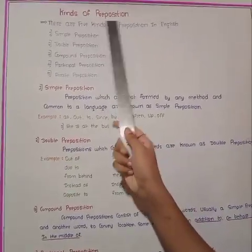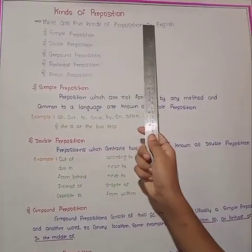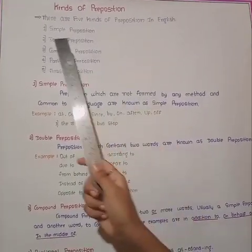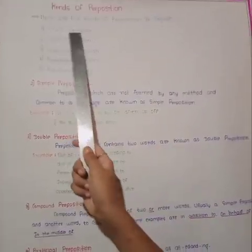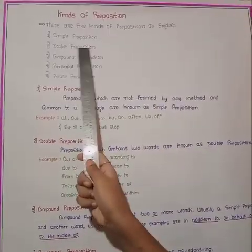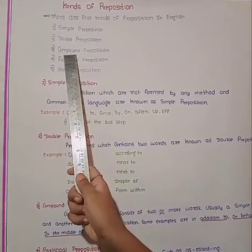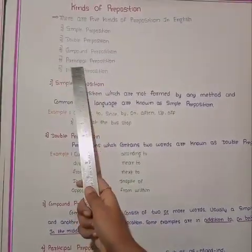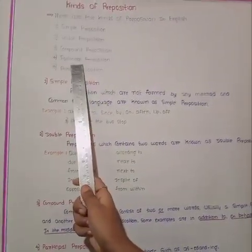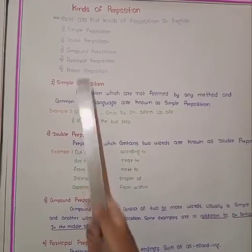Kinds of preposition. There are five kinds of preposition in English. First one: Simple preposition. Second one: Double preposition. Third one: Compound preposition. Fourth one: Participle preposition. Fifth one: Phrase preposition.